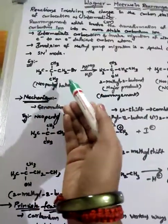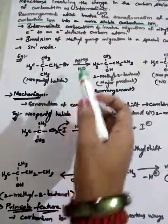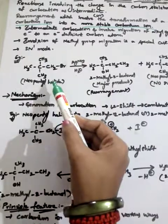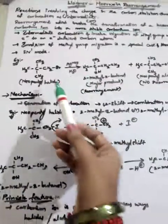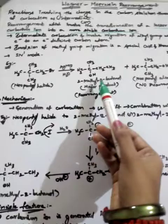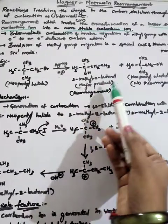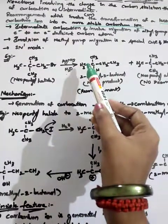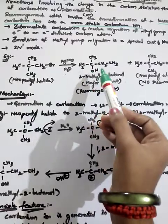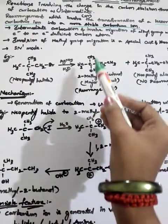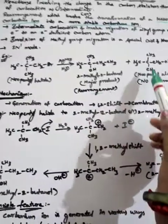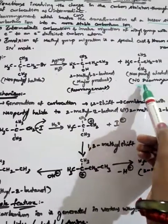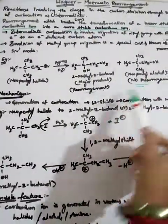In the presence of silver nitrate and water, neopentyl halide forms 2-methyl-2-butanol as the major product and neopentyl alcohol as the minor product. The major product 2-methyl-2-butanol involves rearrangement, whereas neopentyl alcohol does not involve any rearrangement, hence it is the minor product.